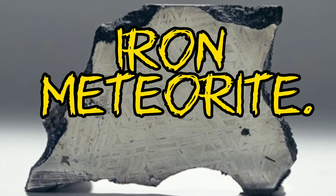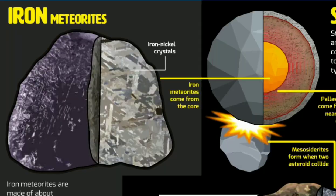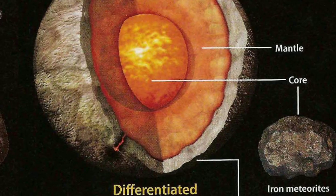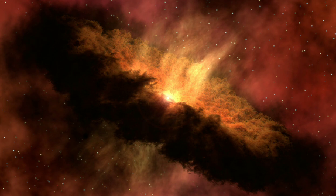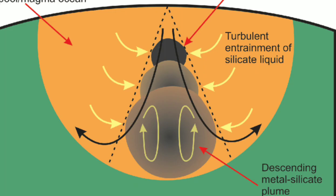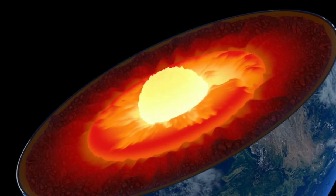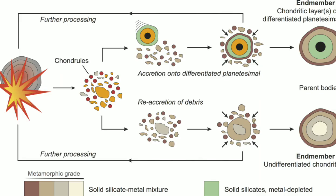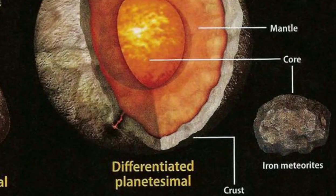Most iron meteorites are thought to be the cores of asteroids that melted early in their history. They consist mainly of iron-nickel metal with small amounts of sulfide and carbide minerals. During the decay of radioactive elements in the early history of the solar system, many asteroids melted and the iron they contained, being dense, sank to the center to form a metallic core. Meteorites from melted asteroids are also known as differentiated meteorites, as they have experienced major chemical or physical changes, solidifying from a molten state.